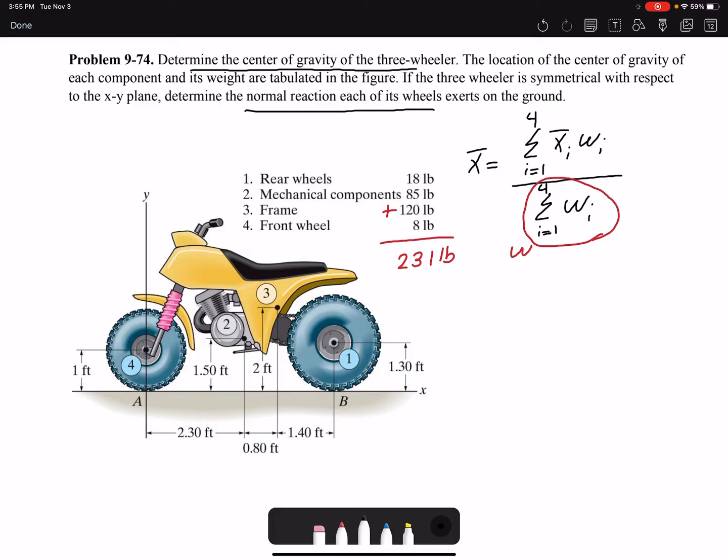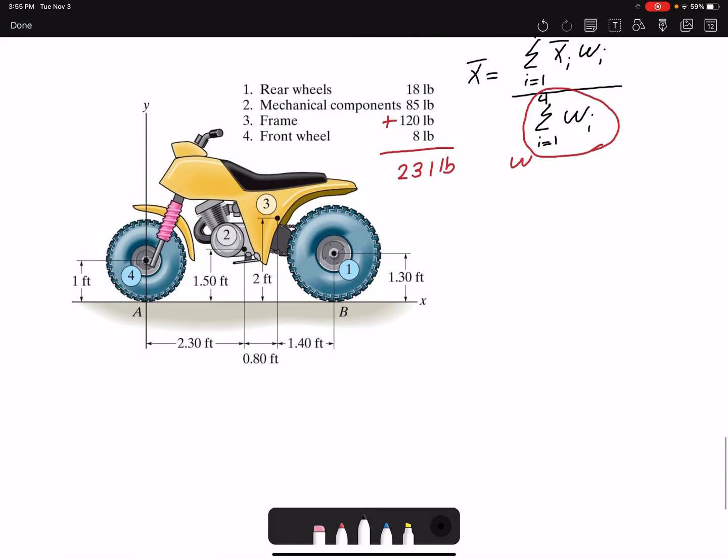And then we can find X bar based on the centroid of each component. So if I write it here, X bar. I have the first component, 18 pound, the rear wheel. The centroid for that would be 4.5. If we add 1.4 plus 0.8 plus 2.3, we get 4.5.